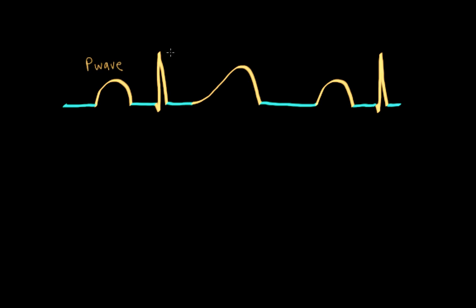Now the depolarization is going to spread through the AV node, the bundle of his and bundle branches. And we're going to have our next major waveform, which is the QRS complex.